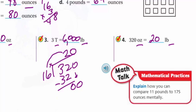Math talk: explain how you can compare 11 pounds to 175 ounces mentally. I would take 11 pounds and convert it to ounces. Since 10 pounds is a power of 10, 10 times 16 gives 160. Then I add another 16, giving me 176 ounces. And that's very close to 175 — within one ounce. Amazing how close that is!